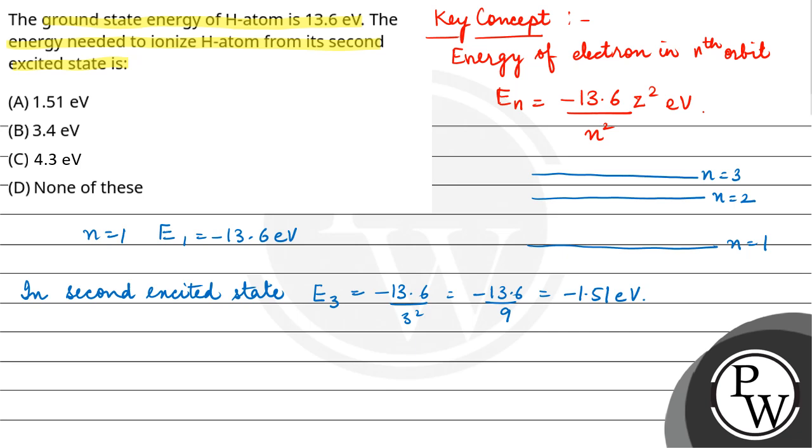Now you have to tell the energy needed to ionize the hydrogen atom from its second excited state. That means how much energy you have to give. In that case, the negative energy becomes positive because you have to give energy.